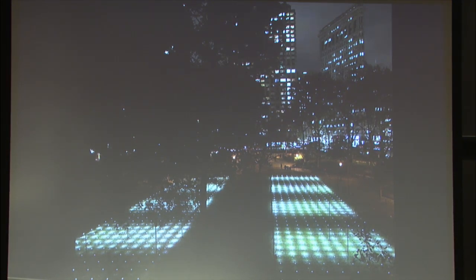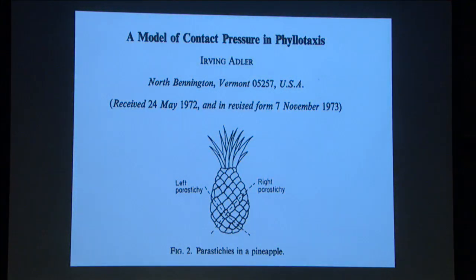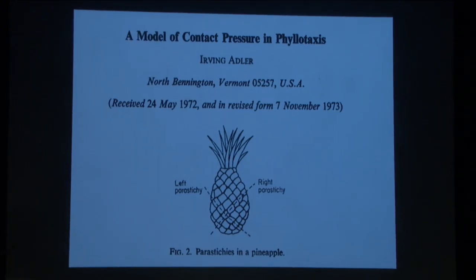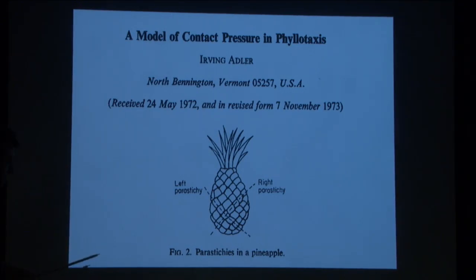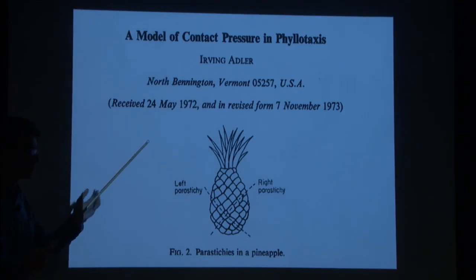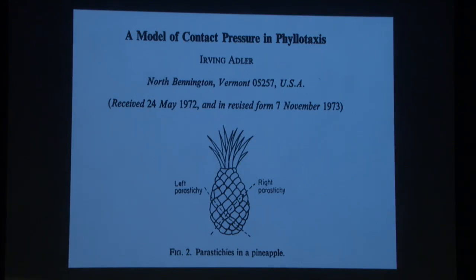Lattices are really everywhere. I was happy to find them also in a paper by Irving Adler. He was interested in phyllotaxis — the arrangement of leaves in plants. One of the figures in the paper talks about parasticies, which are cylindrical arrangements. It's not quite a lattice, but if you look at it up close and ignore the cylindrical structure of the pineapple, you will see some lattice in there.